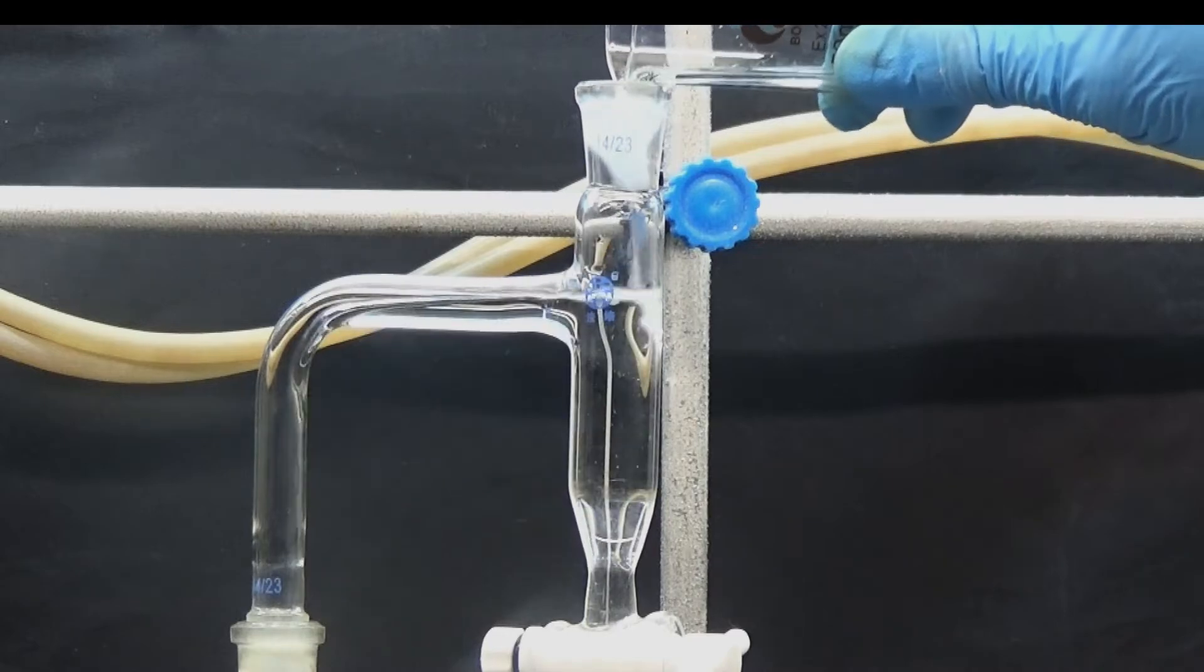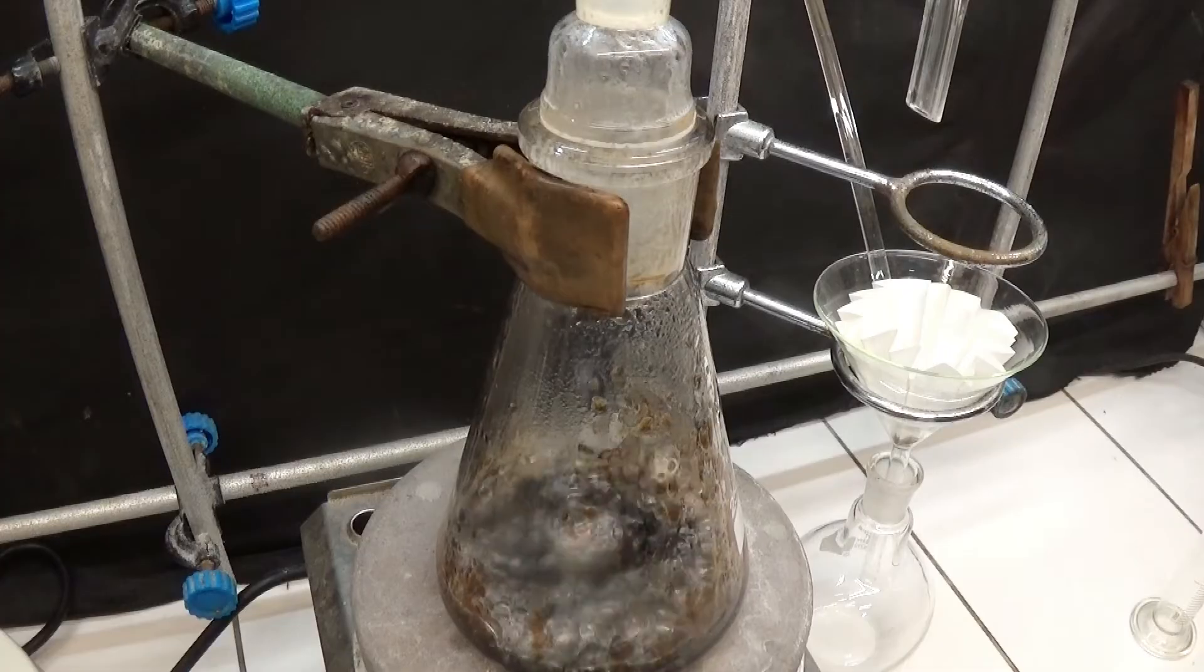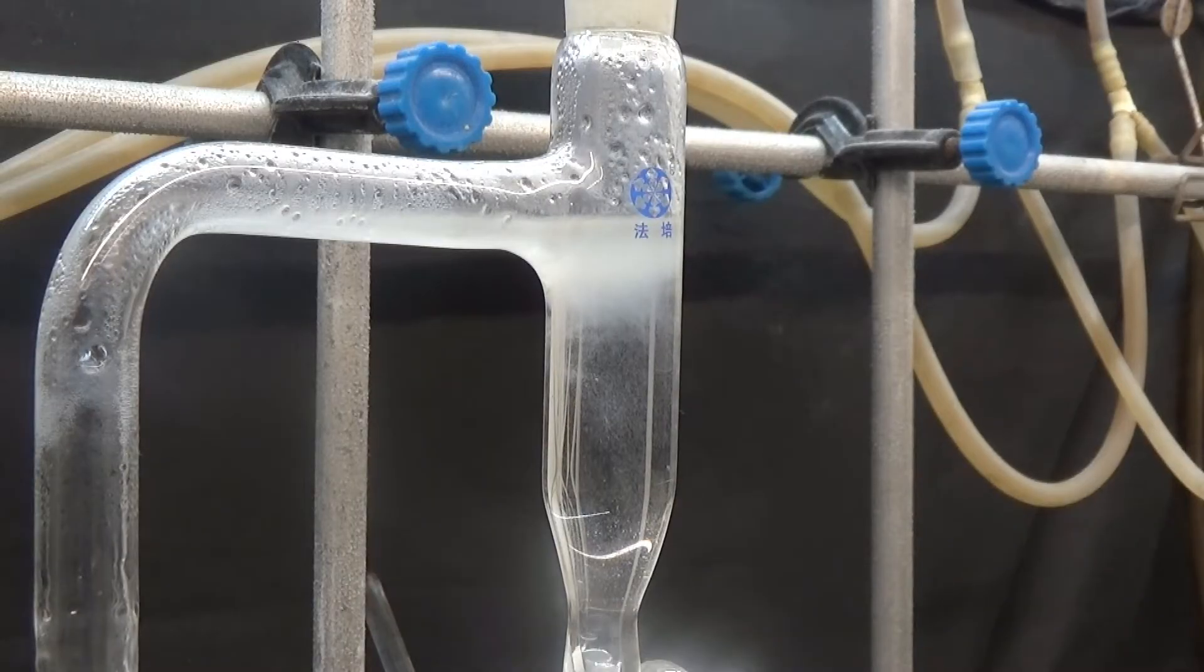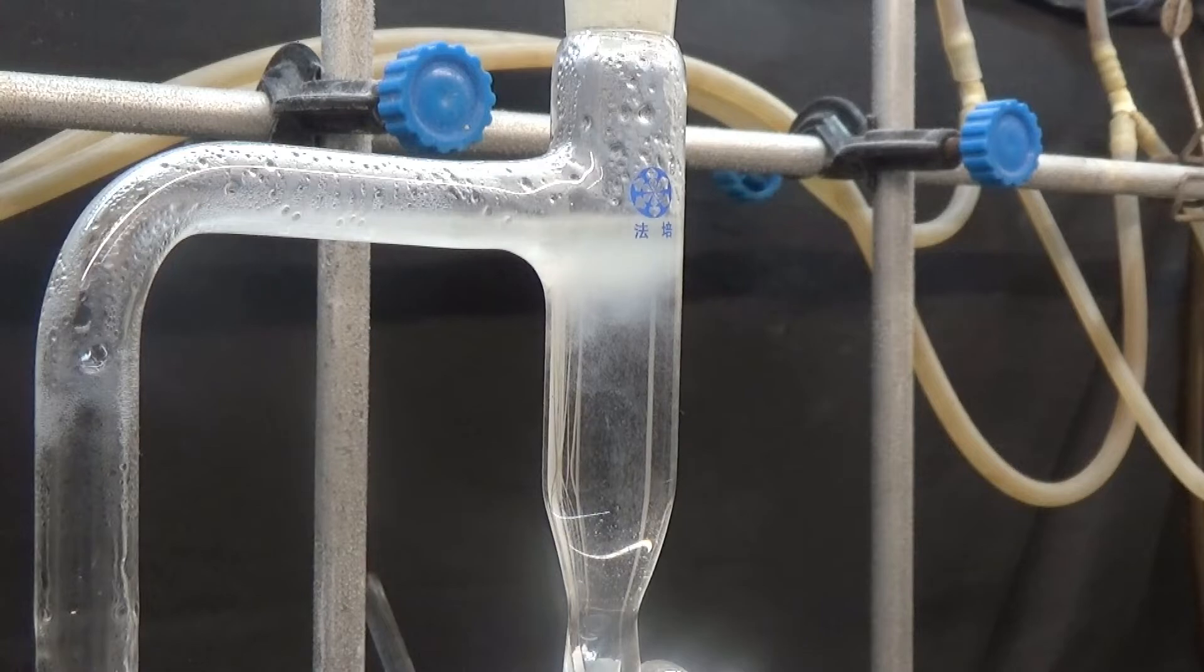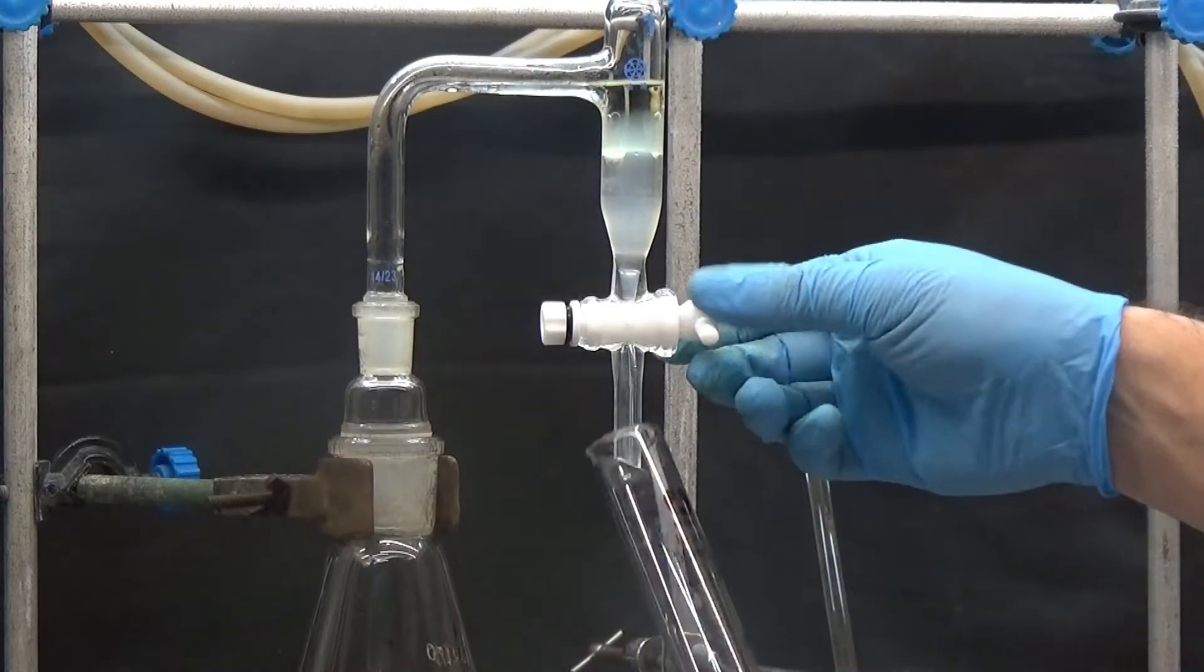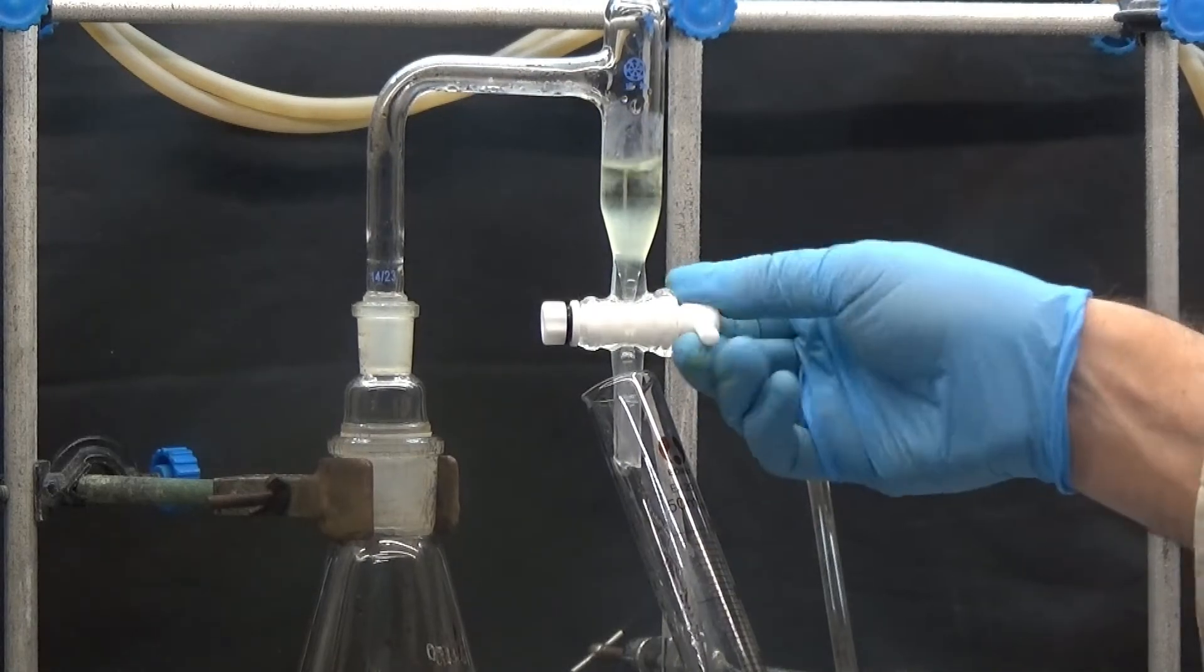Assemble a Dean-Stark and fill with 25 milliliters of toluene. Heat the flask to distill the toluene-water azeotrope. Remove the distilled water that separates in the Dean-Stark. Distill until no water drops are observed.